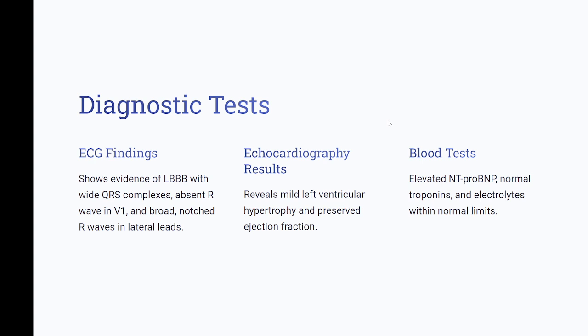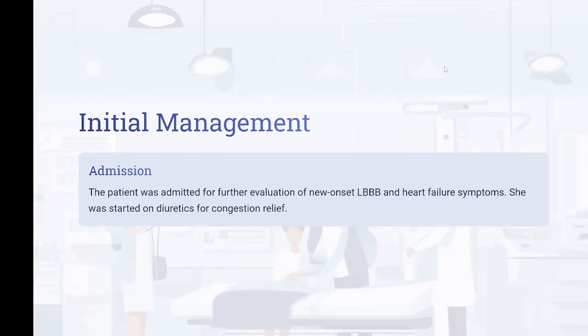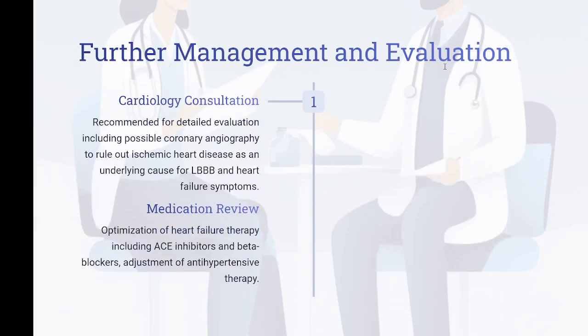Echocardiography reveals mild left ventricular hypertrophy and preserved ejection fraction. Blood tests: elevated NT-proBNP, normal troponins, electrolytes within normal limits. The patient was admitted for further evaluation of new-onset LBBB and heart failure symptoms and started on diuretics for congestion relief. Cardiology consultation was recommended, including possible coronary angiography to rule out ischemic heart disease as an underlying cause. Heart failure therapy was optimized including ACE inhibitors and beta blockers.